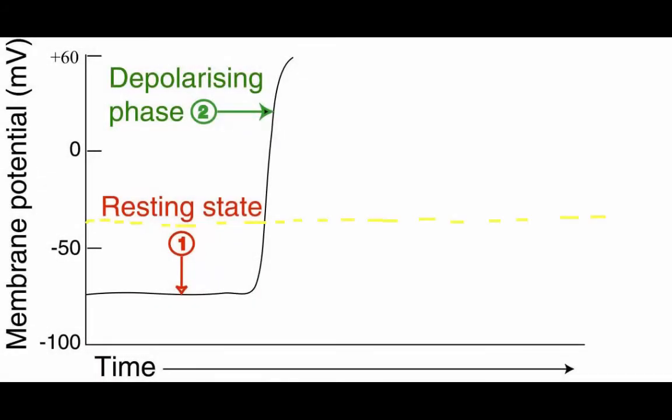During depolarization, the action potential has had its change in voltage. It has gone from negative 70 to positive 14 millivolts. This is where repolarization, the third stage, starts.